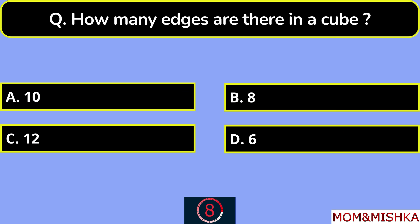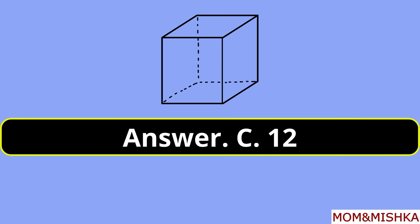How many edges are there in a cube? There are 12 edges. Option C.